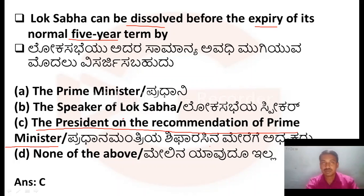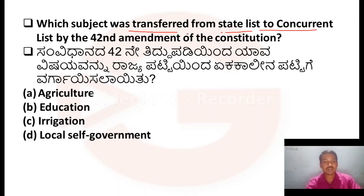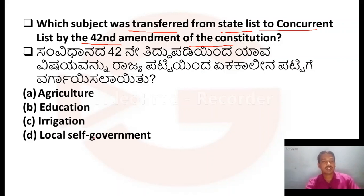Let us go to the next question. Which subject was transferred from state list to concurrent list? There are three lists — union list, state list, and concurrent list. Which subject was transferred from state list to concurrent list by the 42nd Amendment of the Constitution? Option A: Agriculture. Option B: Education. Option C: Irrigation. Option D: Local self-government.